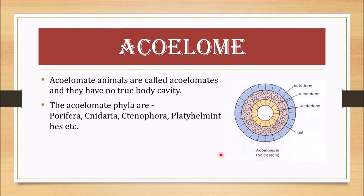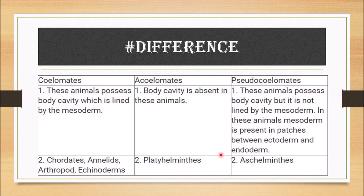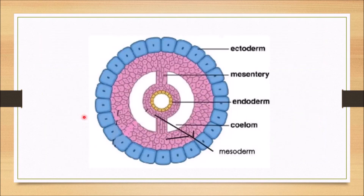They are called acoelomates — no coelom. To summarize: coelomate means the animal possesses a body cavity lined by mesoderm. Acoelomate means without a coelom. Pseudocoelomate means a body cavity exists but it is not lined by mesoderm, and there is no mesentery.